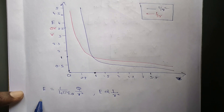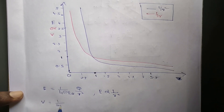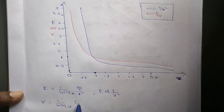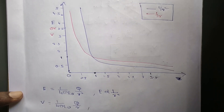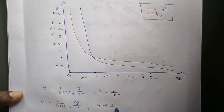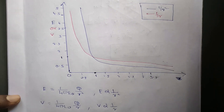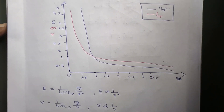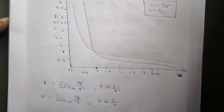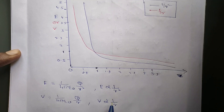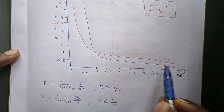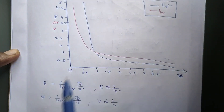What is the electric potential formula? V = (1/4πε₀) × Q/r. Here you can see that electric potential is inversely proportional to distance to the power 1. So the electric potential graph is also a parabola.